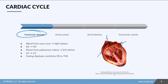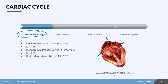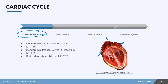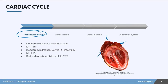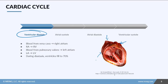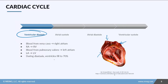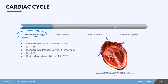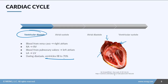When blood enters the left atrium, it goes into the left ventricle. There's going to be a pause — this is the diastasis I mentioned earlier. During this pause, the ventricles are going to fill to about 70%.